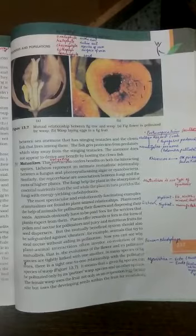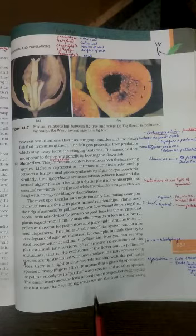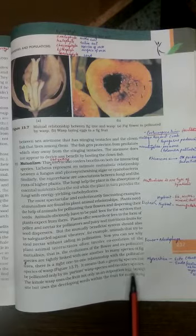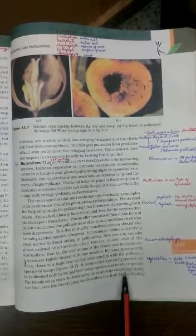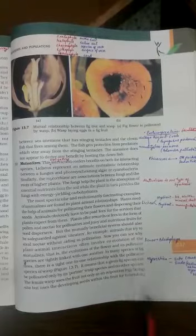The female wasp uses the fruit not only for laying down their eggs - that means oviposition - but also uses the developing seeds within the fruit for nourishing.